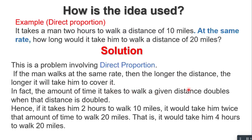In fact, the amount of time it takes to walk a distance doubles when that distance is doubled. Since it takes the man two hours to walk 10 miles, it will take him twice that amount of time — four hours — to walk 20 miles. That is direct proportion. Now let's apply the 'if more, less divide; if less, more divide' idea to solve this question.